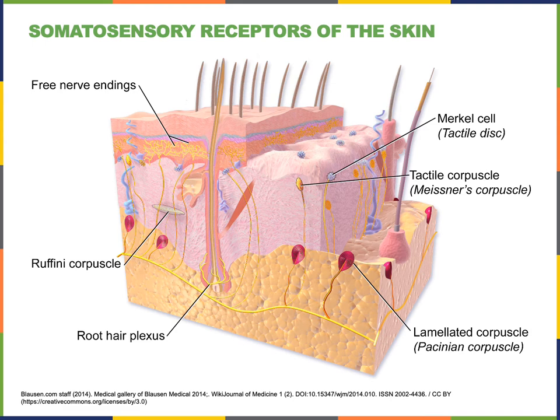There are thermoreceptors which react to changes in temperature. There are two main types of thermoreceptors: cold thermoreceptors that respond to decreasing temperature, and warm thermoreceptors that respond to increasing temperature. There are more cold thermoreceptors than warm thermoreceptors, and cold thermoreceptors are also found closer to the surface, which makes us more sensitive to decreasing temperature than increasing temperature.